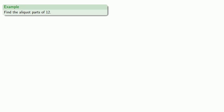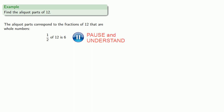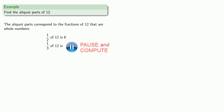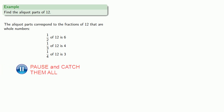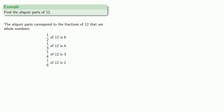So let's find the aliquot parts of twelve. The aliquot parts correspond to the fractions of twelve that give us whole numbers. So we could take half of twelve — that's six; one third of twelve — that's four; one fourth of twelve — which will be three; and then we can also take the fractional parts one sixth and one twelfth.